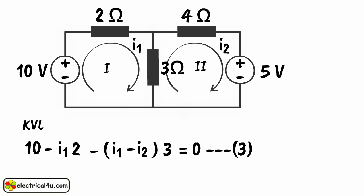(I2 minus I1) into 3 minus I2 into 4 minus 5 equals 0. Let's say this is equation 4.